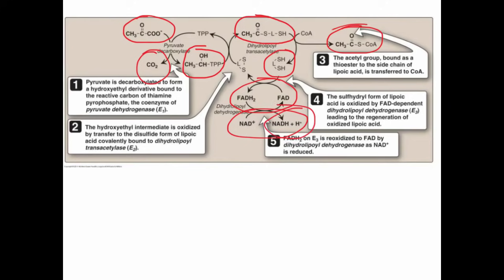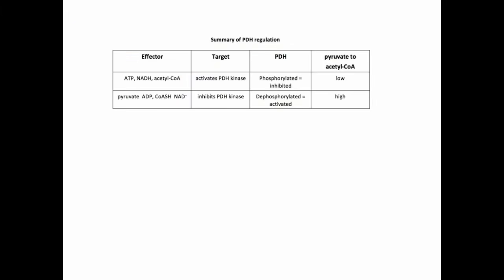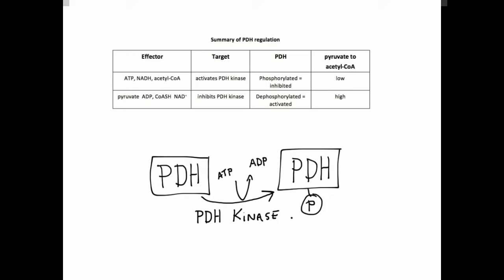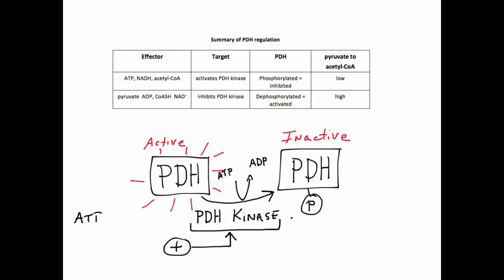The enzyme complex is regulated by phosphorylation and dephosphorylation. There's another enzyme associated with this complex, pyruvate dehydrogenase kinase, which is a regulatory enzyme. It attaches a phosphate from ATP to one of the PDH enzymes, and this inhibits the reaction. The kinase is activated allosterically by ATP, acetyl-CoA, and reduced NADH. So when energy levels in the cell are high — lots of ATP — and the products of the reaction, acetyl-CoA and NADH, build up, they inhibit the enzyme by allosterically activating PDH kinase.